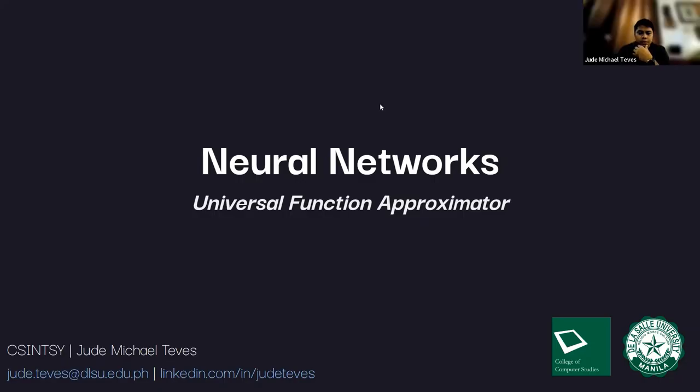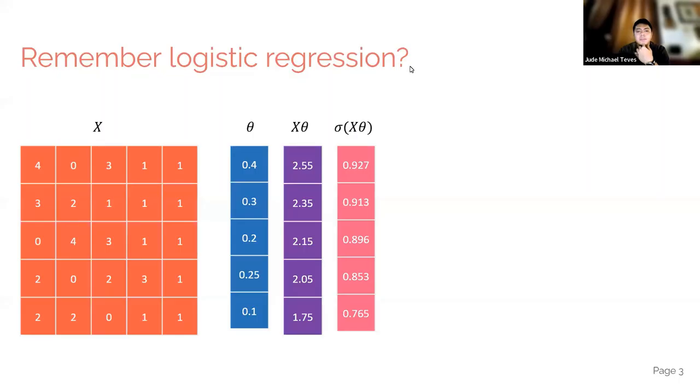So yeah, neural networks is a universal function approximator. Do you guys still remember logistic regression? Thumbs up if you do. Who remembers logistic regression?